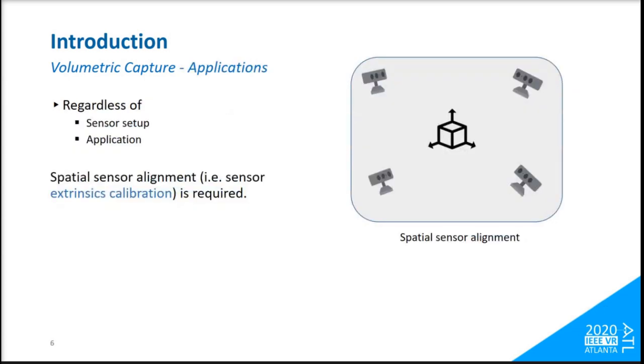Regardless of the number and type of sensors or application, all these systems require multi-sensor spatial alignment, which is an enabling feature for volumetric capture in order to fuse all acquired data into a common global coordinate system.